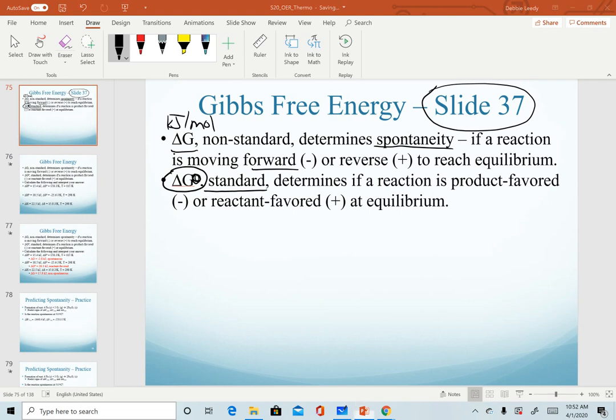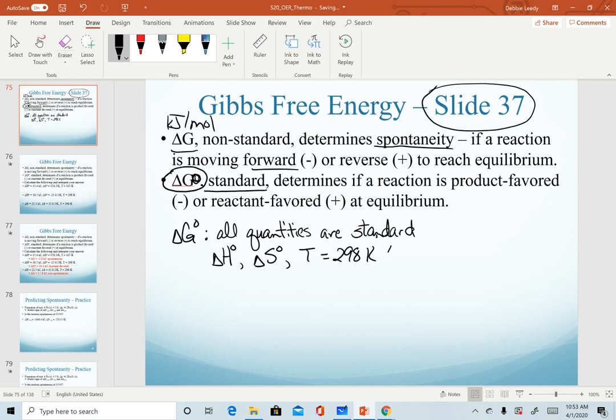Actually, I'm going to go back a slide. To calculate standard delta G, every quantity must be in standard notation or standard measurements. That means if we are calculating Gibbs free energy using enthalpy, the enthalpy value must be standard, the entropy value must be standard, and our temperature must be at 298 Kelvin, or if we're converting from Celsius, 25 degrees Celsius.